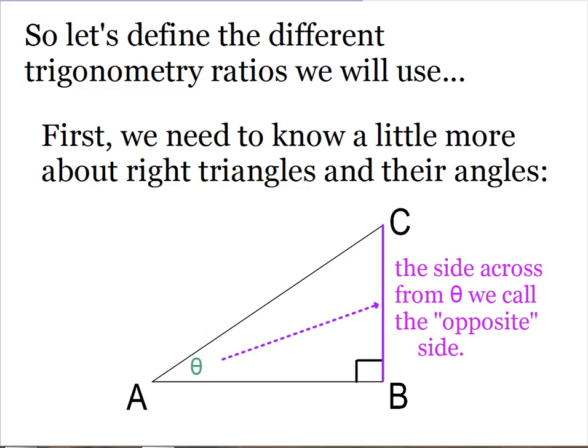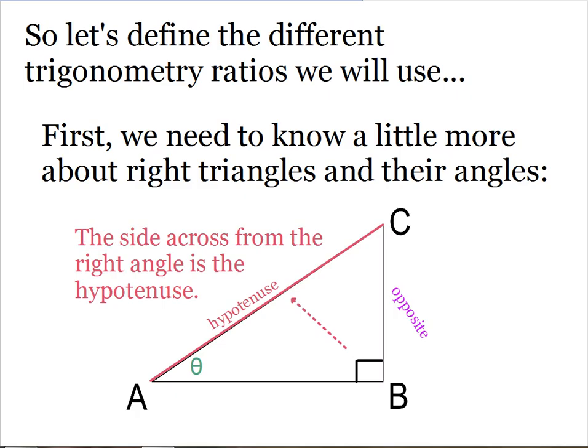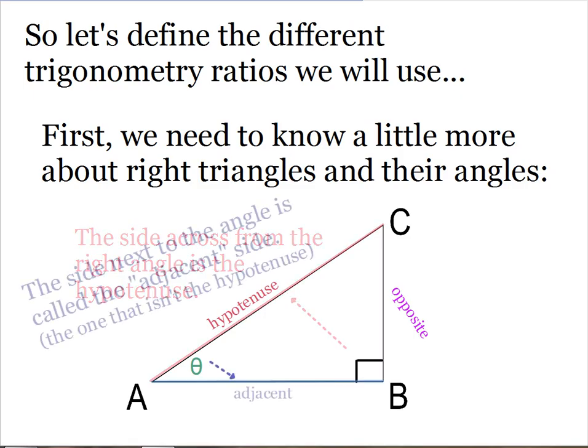So the side across from theta, we're going to call that the opposite side. This side is opposite from our angle. The side across from the right angle is always called the hypotenuse. And the side right next to the angle or to the side of the angle, I can also say that it's touching that angle or part of that angle, is called the adjacent side.